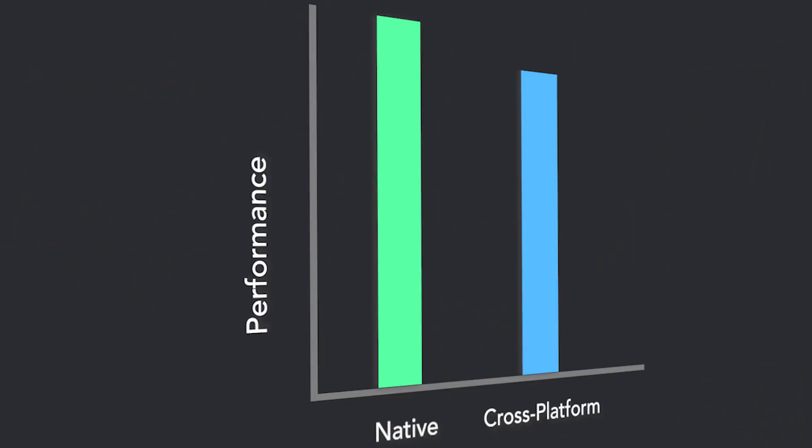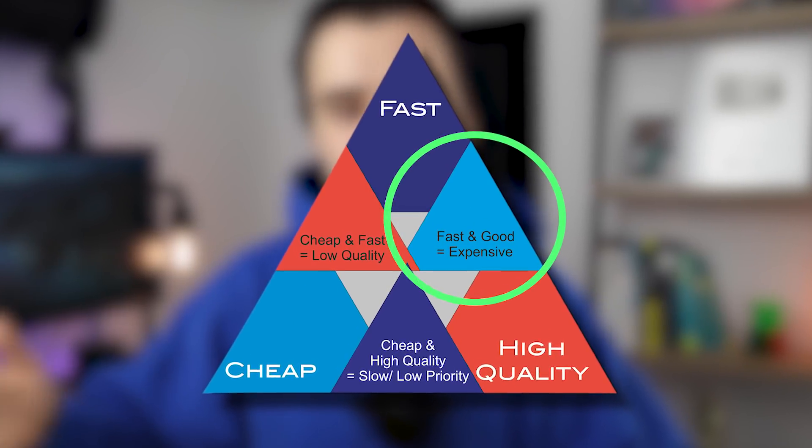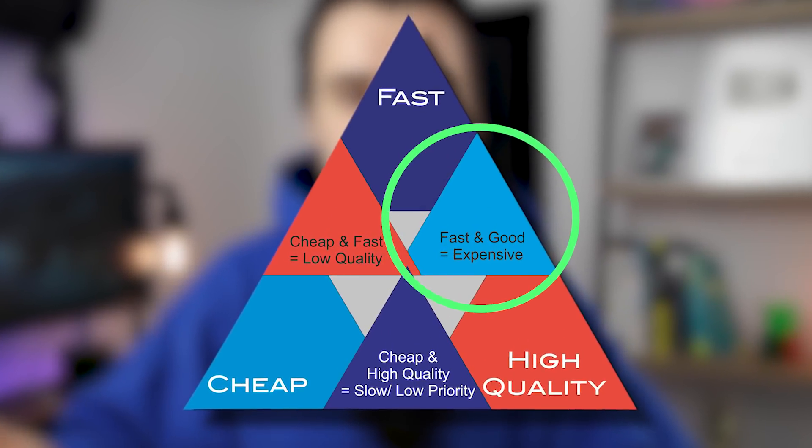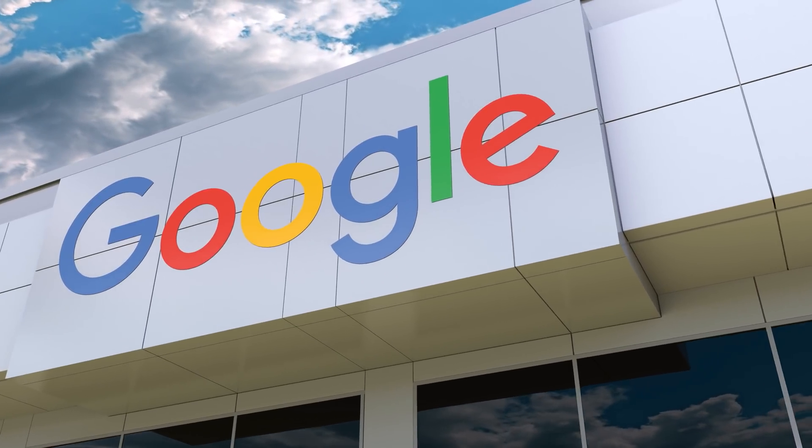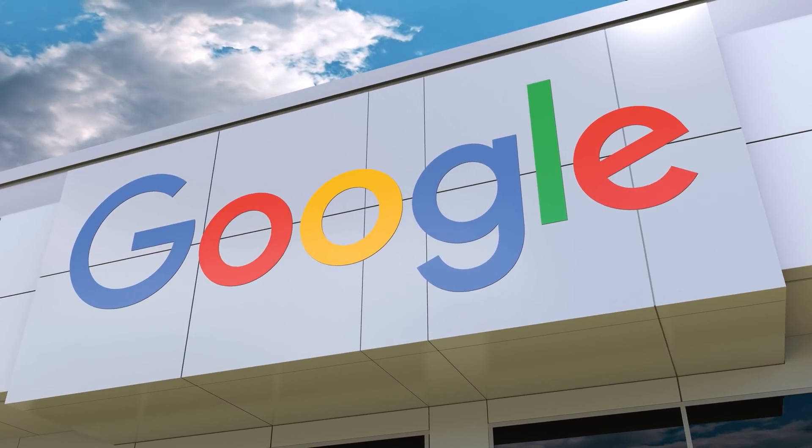Why is this important for your tech career? Because the companies that care about that extra 5 to 10% performance tend to be larger companies like big tech or big medical companies that have money to throw around — companies that can choose the high quality plus fast option on the project management triangle. And companies with this kind of budget also have the budget to hire top-tier native mobile developers to squeeze out that extra 5 to 10%. So if your dream is to work at one of these top-tier companies, make sure you realize that before you box yourself into a specific career path. Also, once you really learn native mobile development, you'll have no problem jumping into a cross-platform technology.